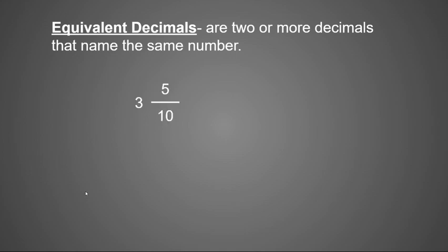So if I had three and five tenths, I could write that as a decimal and it would be three and five tenths, three point five, as some may say.